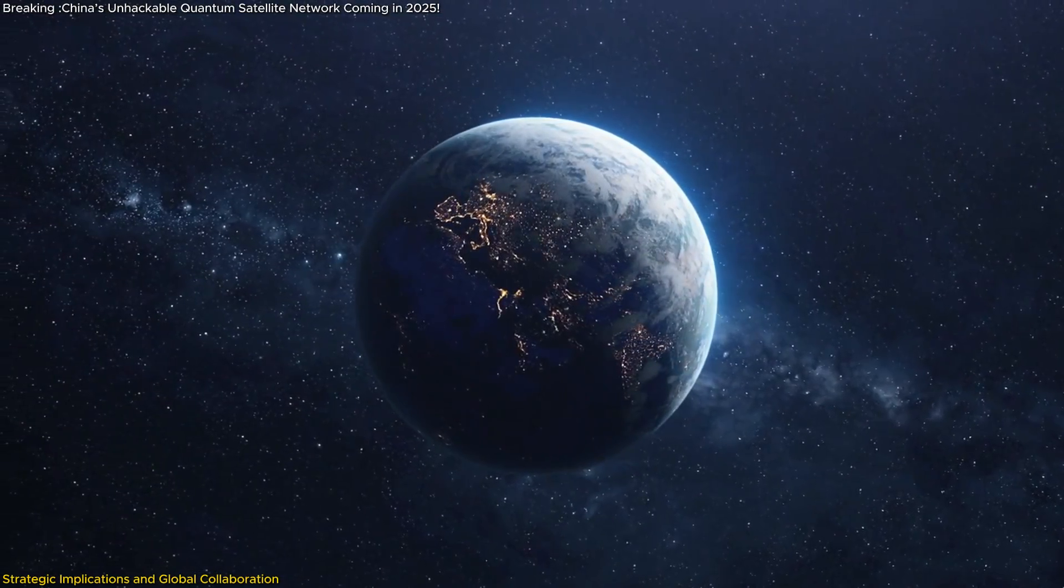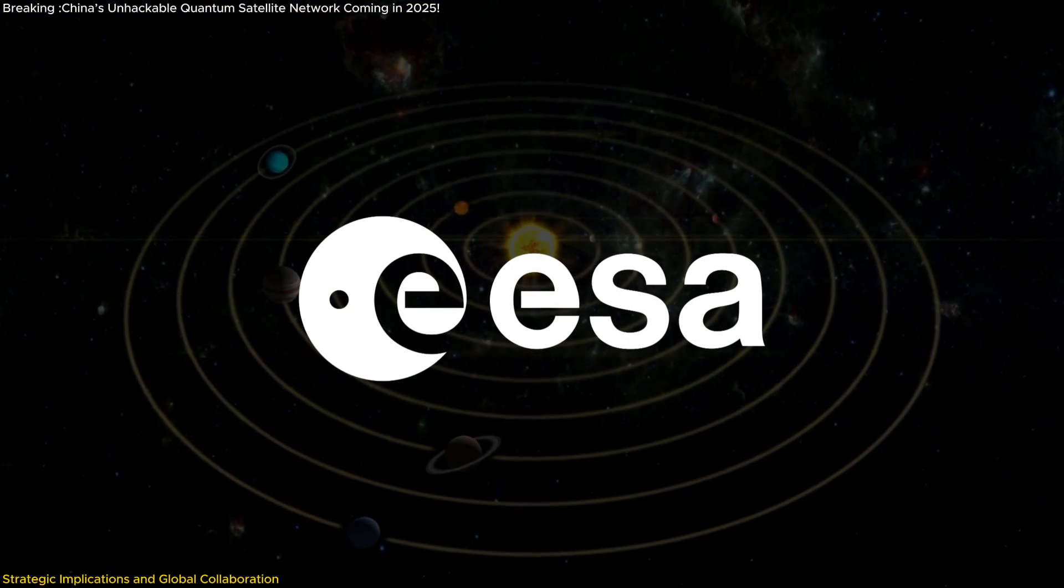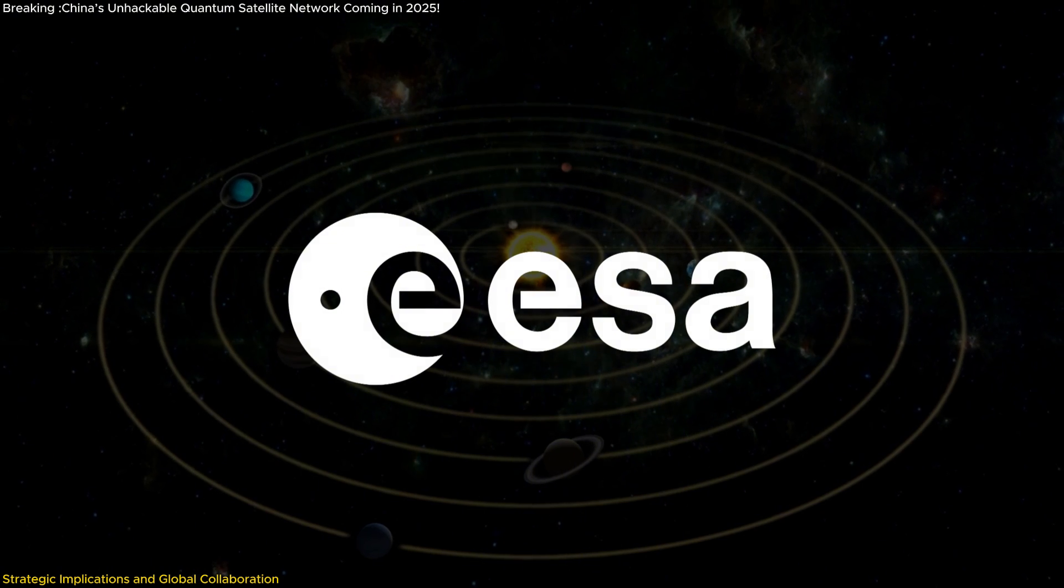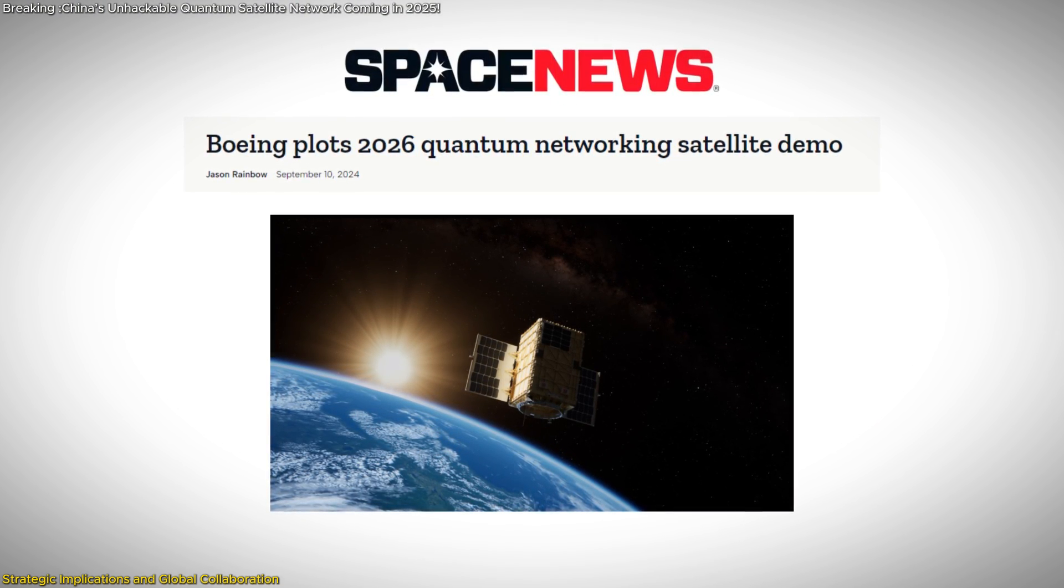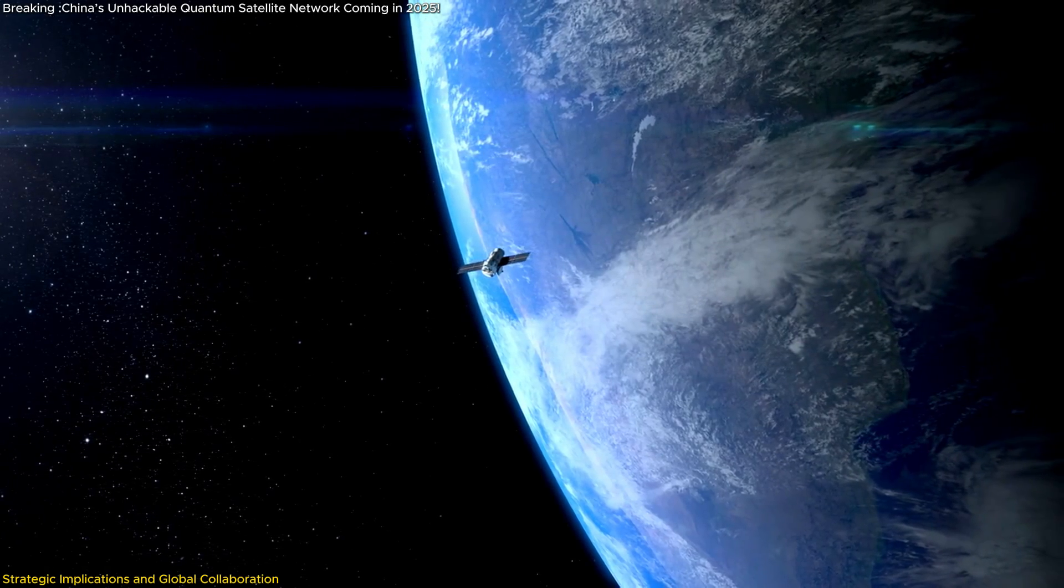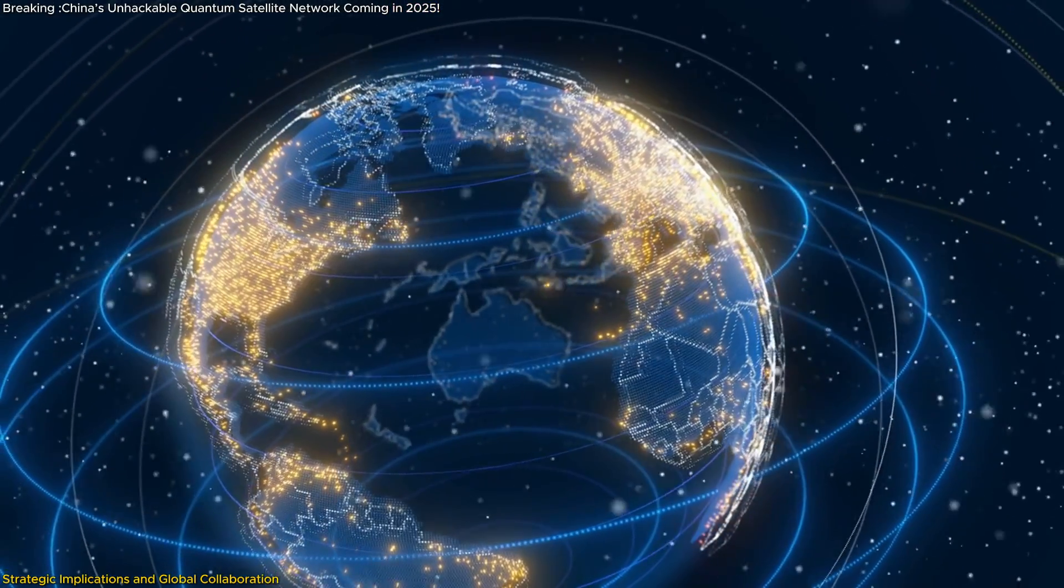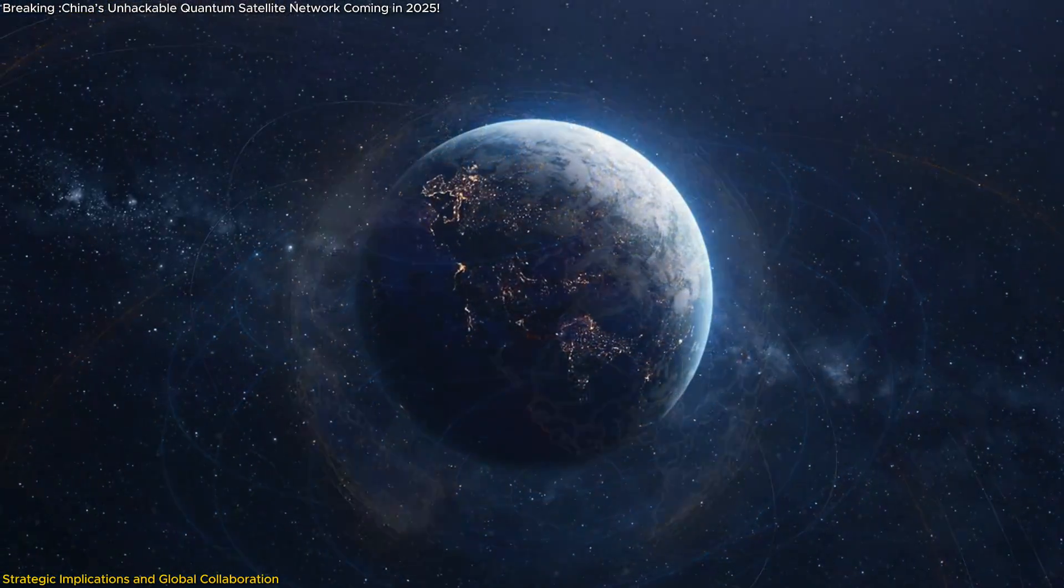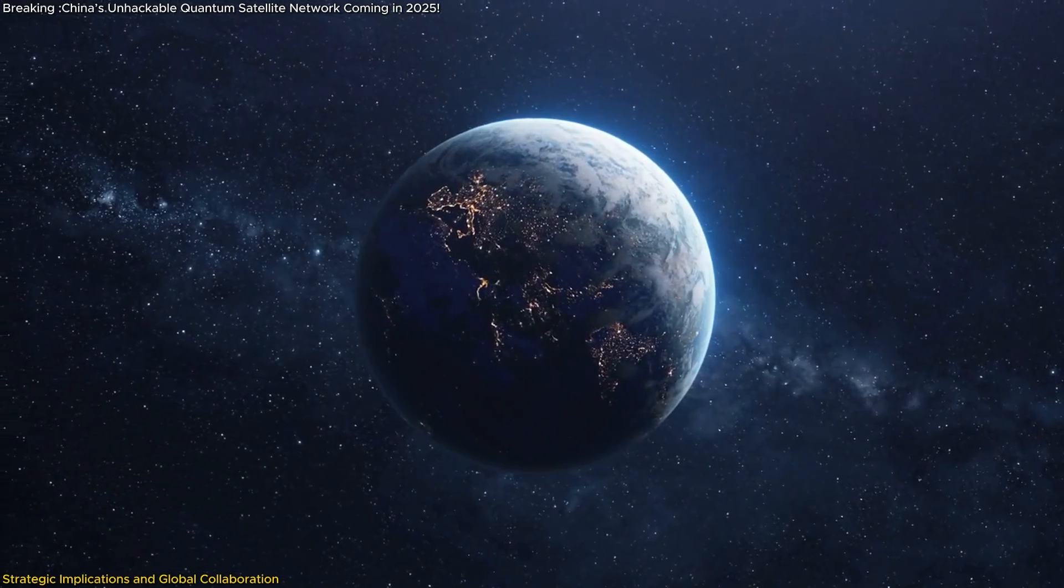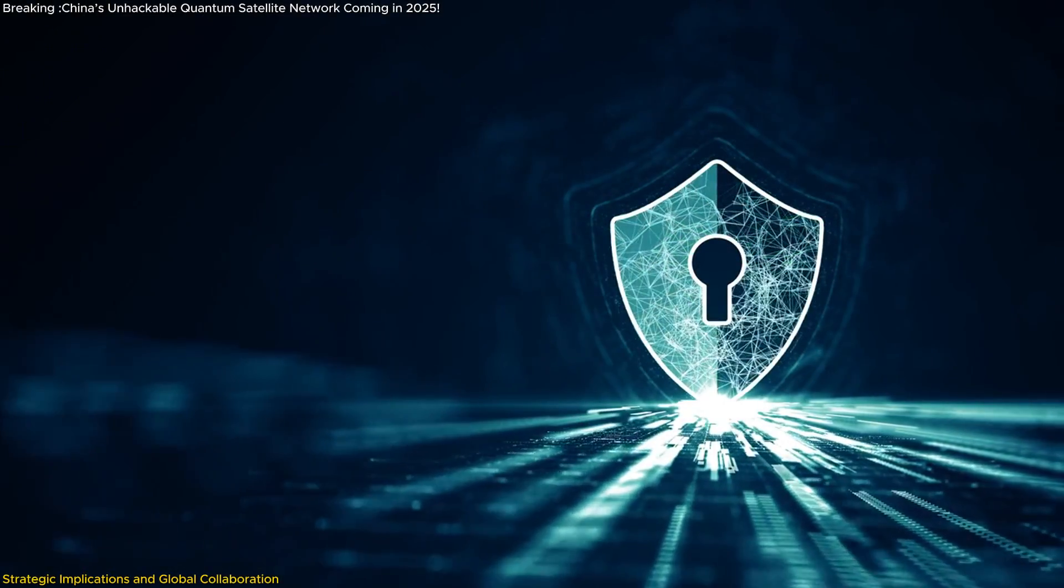However, this also means that other nations are rapidly ramping up their efforts to catch up. The European Space Agency is already working on its own quantum communication network, and private companies like Boeing have announced plans to launch small quantum networking satellites by 2026. The strategic race for quantum supremacy is on, and whoever controls the first functional global quantum communication network will likely set the rules for the next generation of secure communications. This would give that nation a significant geopolitical advantage, potentially influencing everything from economic policies to international security frameworks.